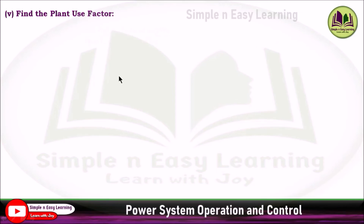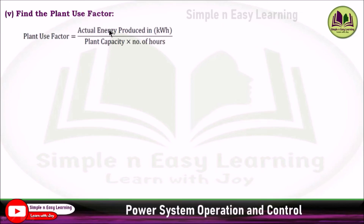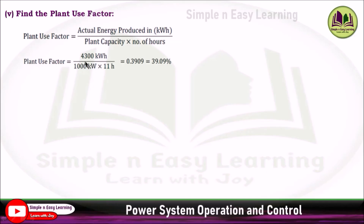Find the plant use factor. Plant use factor equals actual energy produced in kilowatt-hours divided by plant capacity multiplied by number of hours in use. Actual energy produced is 4300 kilowatt-hours divided by 1000 kilowatt capacity, and the number of hours the plant is used is 11 hours. Out of 24 hours, only during 11 hours is load consumed. The plant use factor is 0.3909, or 39.09%.